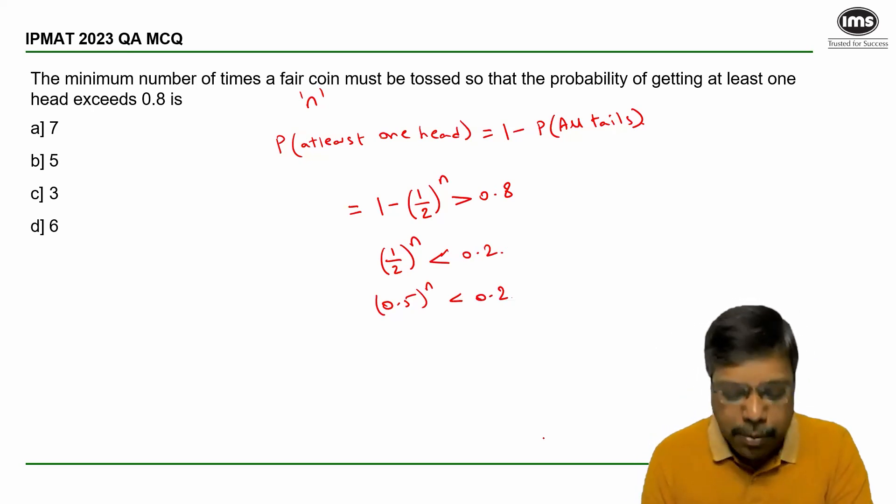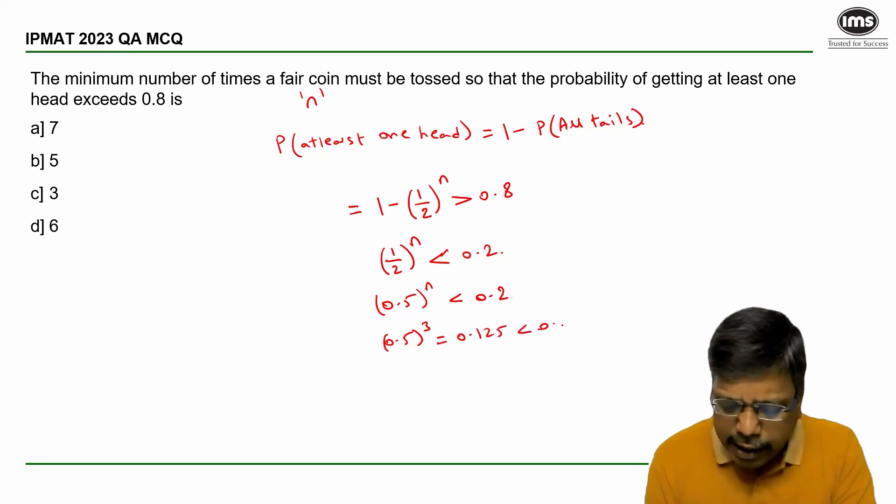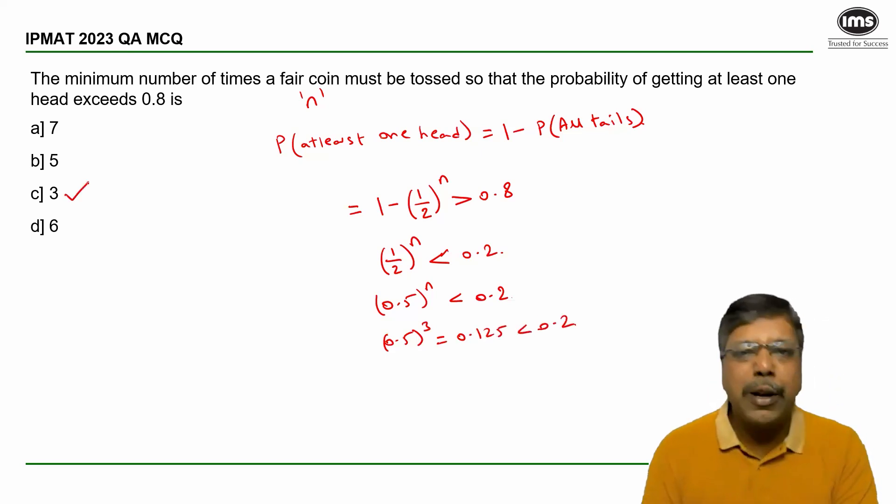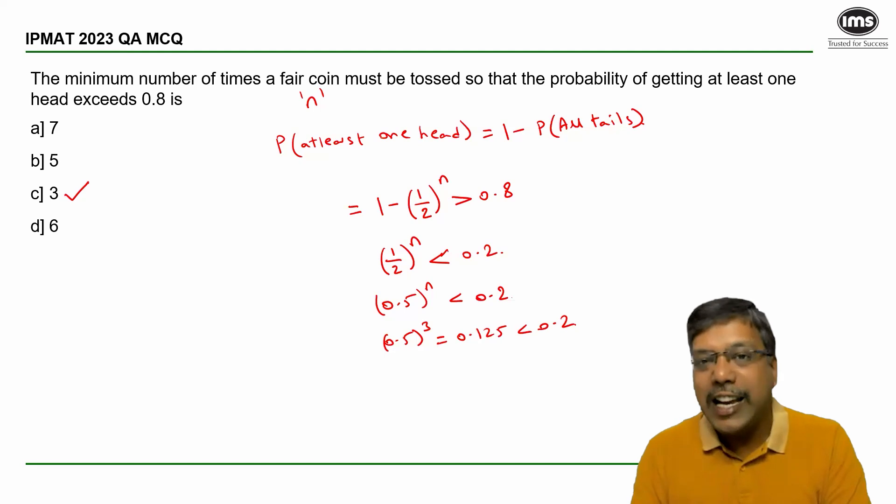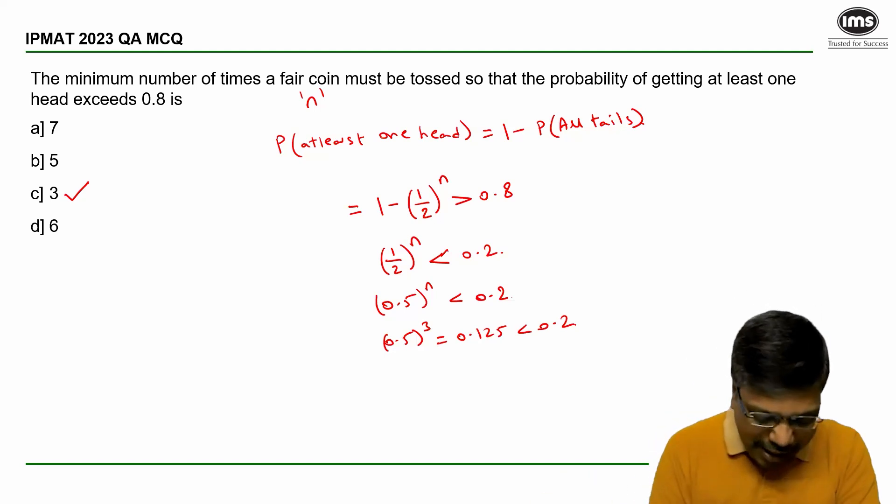I will start with the answer options itself. The minimum value is 3. Now 0.5 cubed is equal to 0.125, which is indeed less than 0.2. Hence the minimum number of times I have to toss a coin so that I get at least one head exceeding 0.8 is 3.